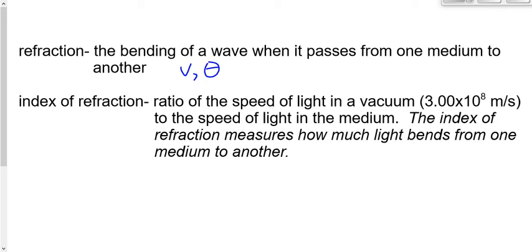In addition to that, one other thing changes in this process of refraction. The wavelength, lambda. So as V goes up or down, theta will go up or down, and lambda will go up or down. What doesn't change? Once the wave has been made, frequency always stays the same. So V, lambda, and theta all change when we go from one medium to another, but frequency stays the same.